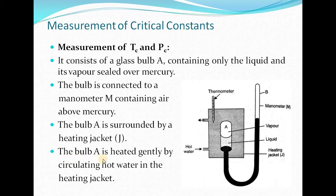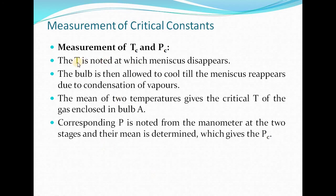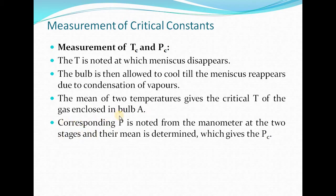First, the bulb A is heated gently by circulating hot water in the heating jacket. As the liquid is heated, at a particular temperature the meniscus between the liquid and vapour phase disappears, and this temperature is noted from the thermometer. The bulb is then allowed to cool until the meniscus reappears due to condensation of vapours, and again this temperature is noted. The mean of these two temperatures gives the critical temperature of the gas enclosed in bulb A.